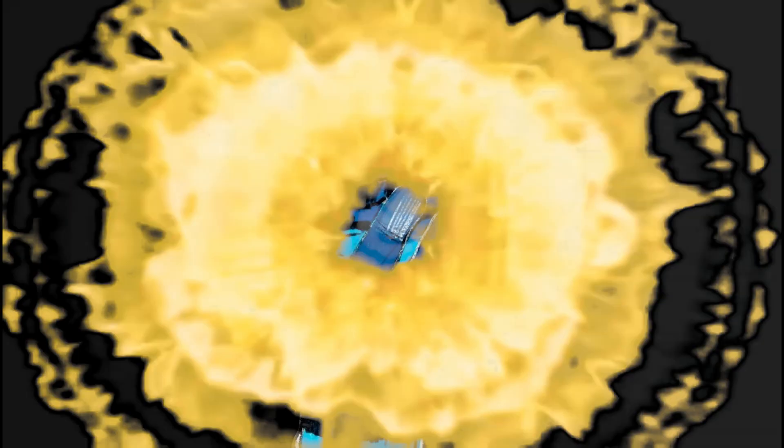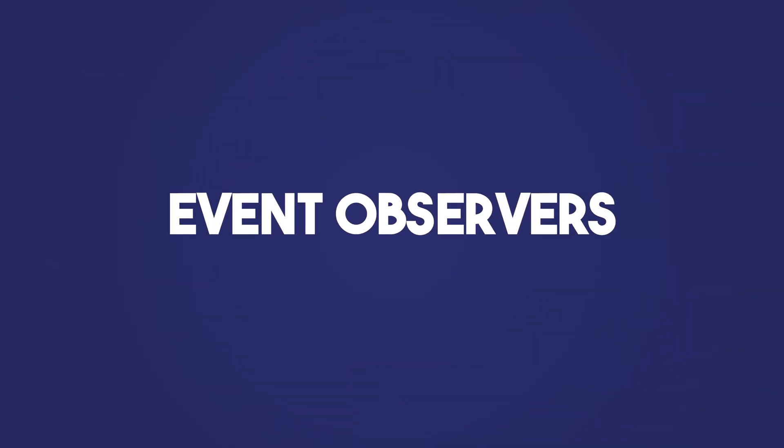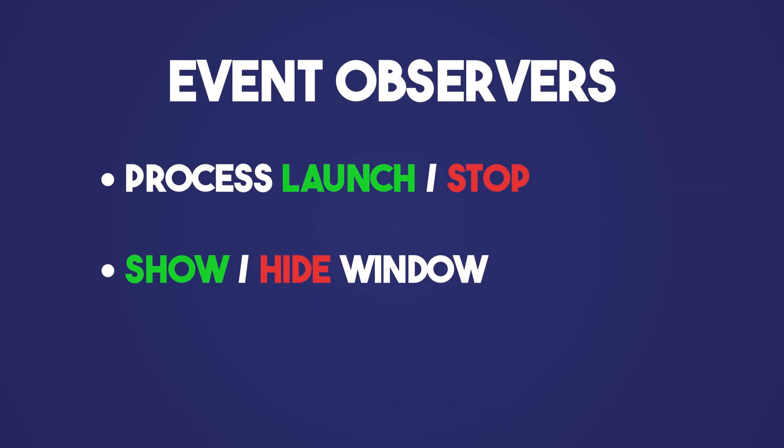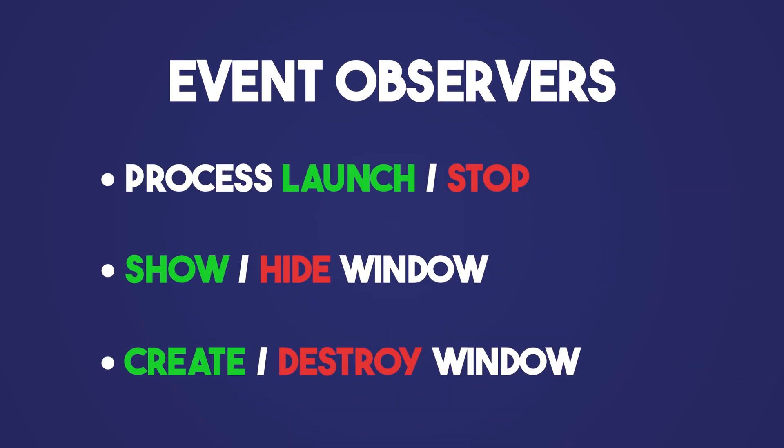Just for likes. Overall, the program has four parts. First, you have the event observers, which, as the name suggests, observe user actions: new process launches, windows being shown, hidden, or destroyed. Think of them as passive sensors.